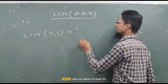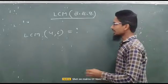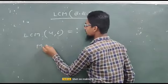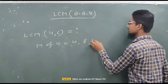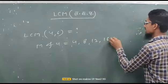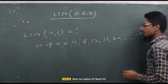What do we call multiple of 4? Multiple of 4 is 4, 8, 12, 16, 20 and so on.